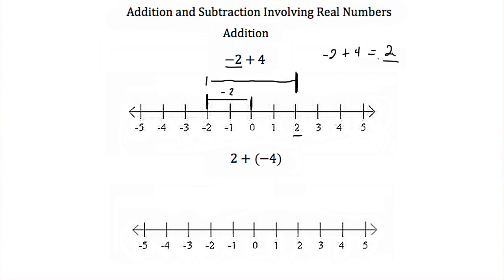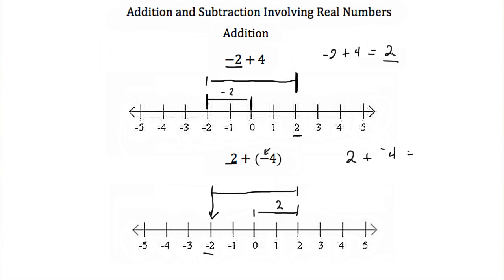Let's try this again. Here we have positive 2 plus a negative 4. We start at 0 on our number line and move positive 2 to the right. Now we're adding a negative 4, which means we go in the negative direction — to the left — four spaces, and we arrive at negative 2. So 2 plus a negative 4 equals negative 2.